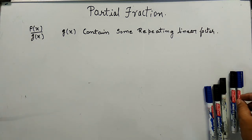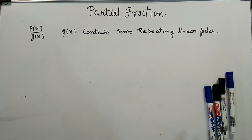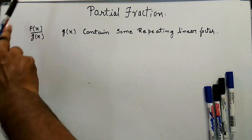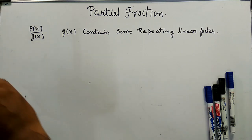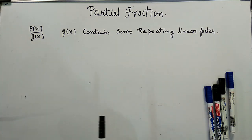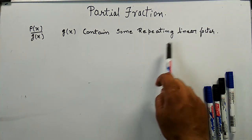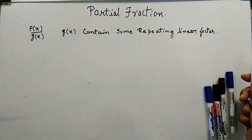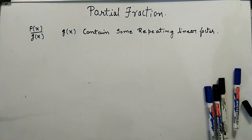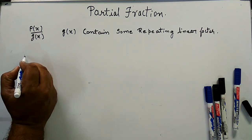Now in Case 2, we are going to see the partial fraction of a rational expression in which the denominator contains some repeating linear factor. So let's take an example for understanding this.